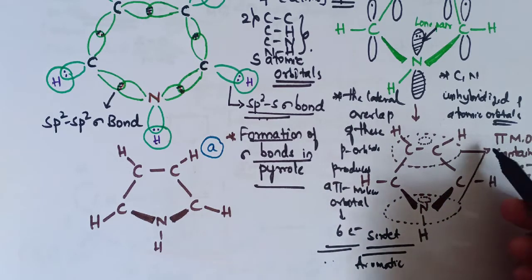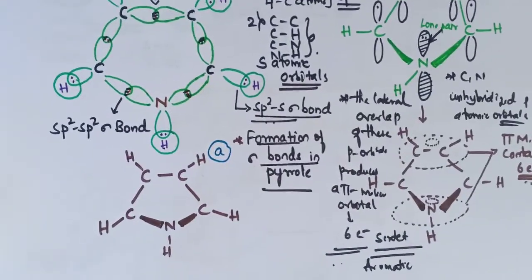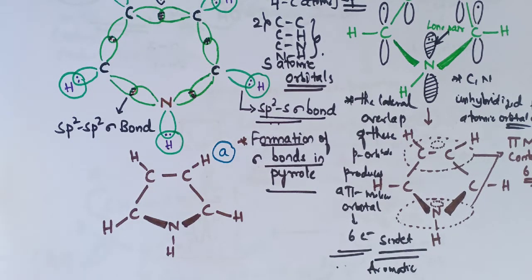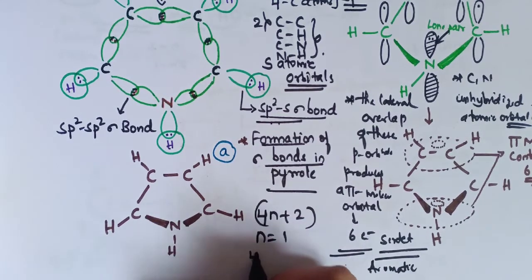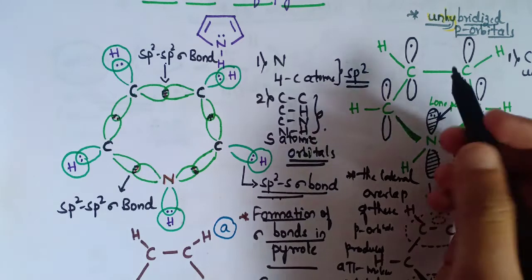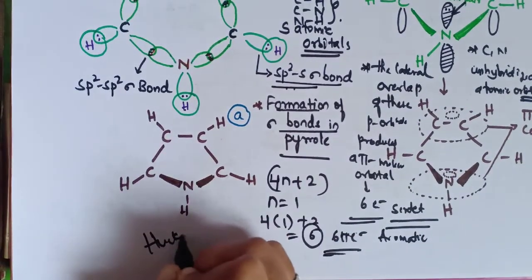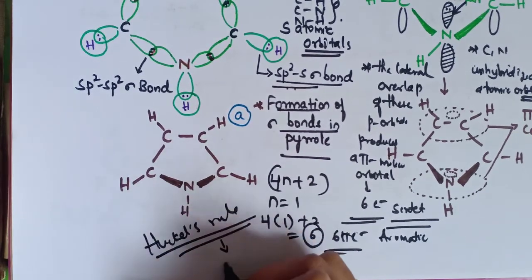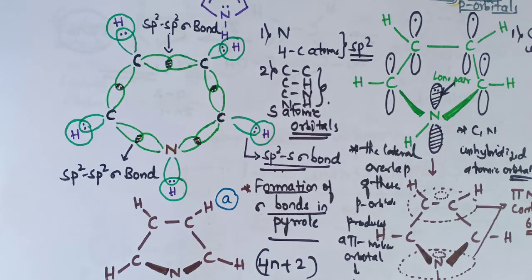In the diagram, the pi molecular orbitals containing six delocalized electrons give pyrrole its aromatic character. Pyrrole obeys Hückel's rule (4n + 2): when n = 1, we get 4×1 + 2 = 6 pi electrons. Since six pi electrons are present, pyrrole satisfies Hückel's rule and exhibits aromaticity. This completes the detailed explanation of the structure of pyrrole.